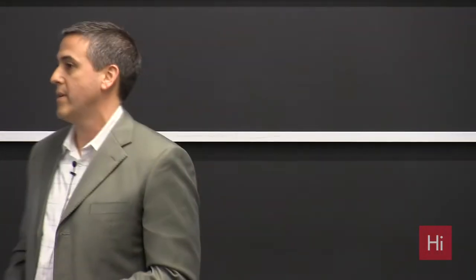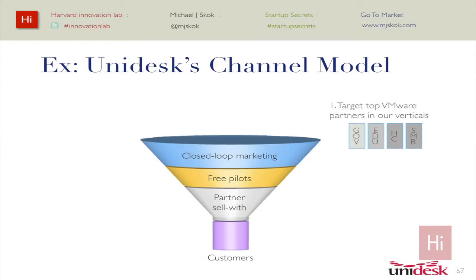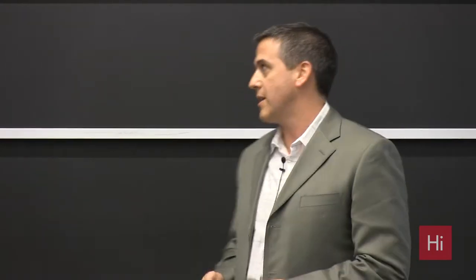There were two reasons why we went to a channel model when we launched. One is that there are five decisions a customer needs to make either before or as they purchase Unidesk. And one key element of that IT infrastructure is a product provided from a little company called VMware. We wanted to target and identify those customers and market specifically to them. So we naturally identified the top VMware partners that sold into the segments we cared most about — state and local government, higher education — and specifically faculty, staff, and knowledge workers, where we could be disruptive for anyone considering desktop virtualization.